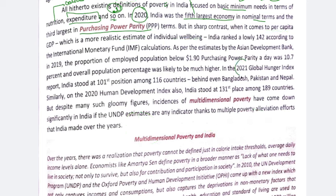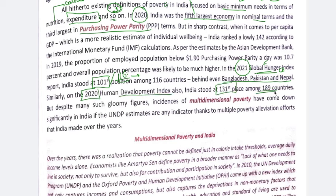In 2021, India's Global Hunger Index position was 101 among 116 countries, behind Bangladesh, Pakistan, and Nepal. In 2020, India ranked 131 out of 189 countries on the Human Development Index.